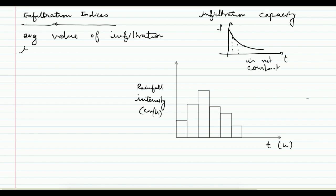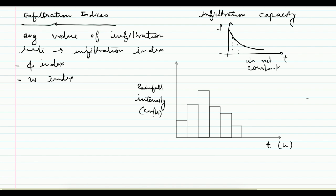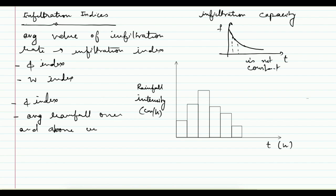This average value we term as the infiltration index. There are two indices for defining this average infiltration rate: the phi index and the w index. The phi index is defined as the average rainfall over and above which rainfall is equal to runoff.